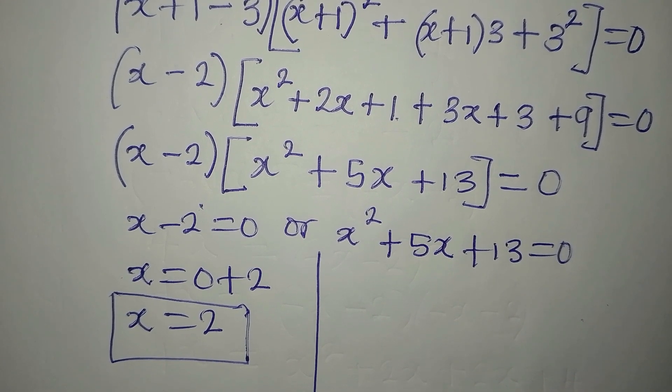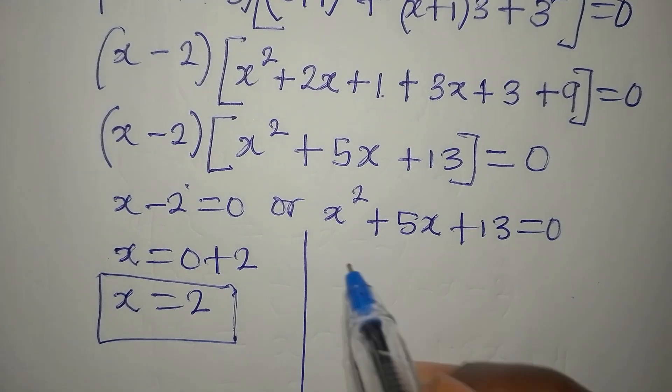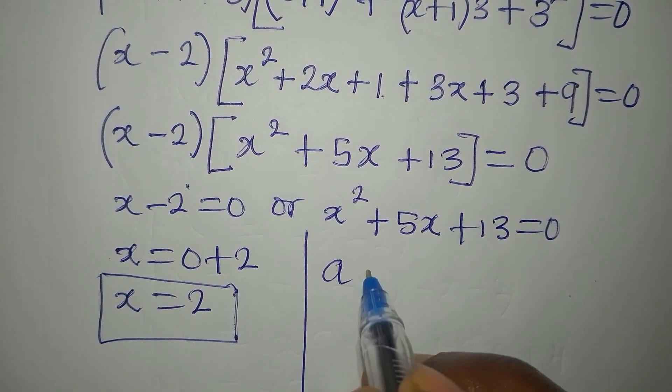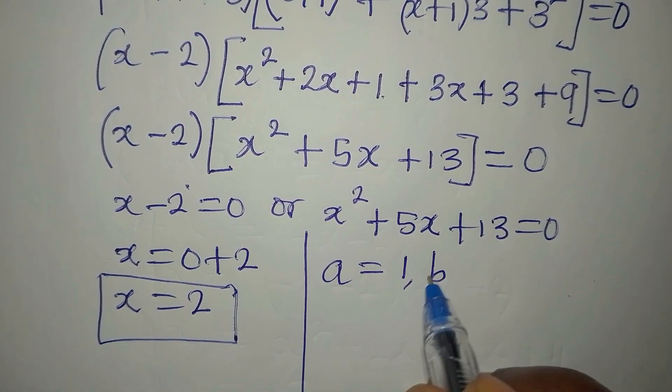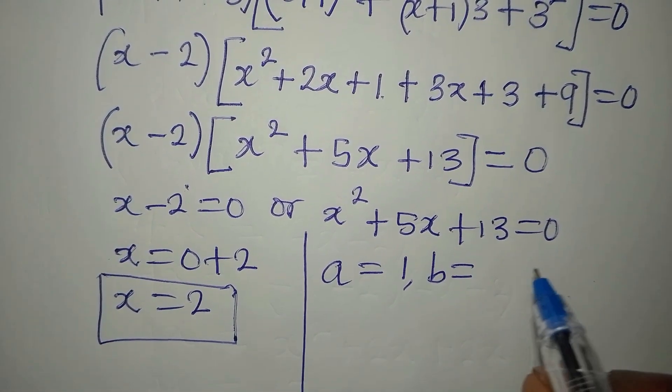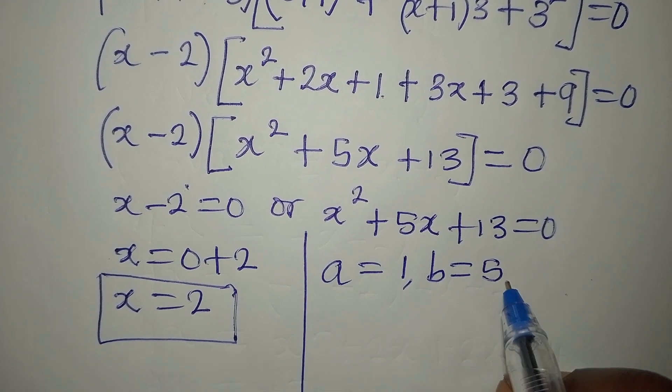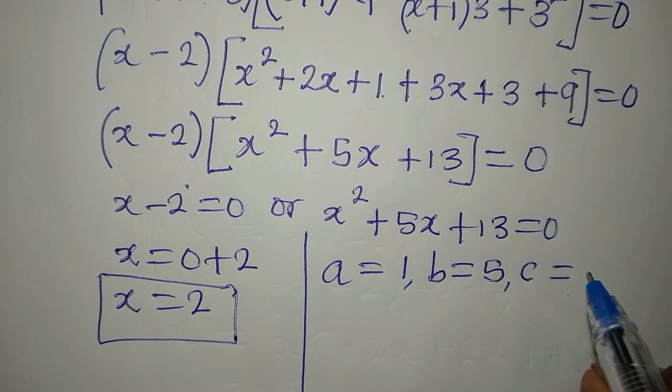And in the formula, if you can recall, we have ABC. A is the coefficient of x squared, that is 1. B is the coefficient of x, and that is positive 5. And our c is the constant, which is 13.